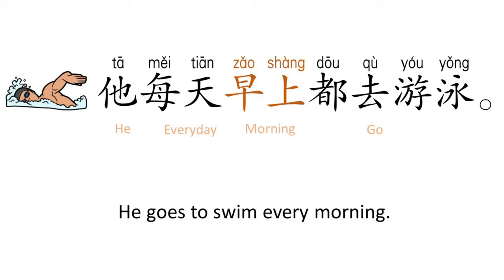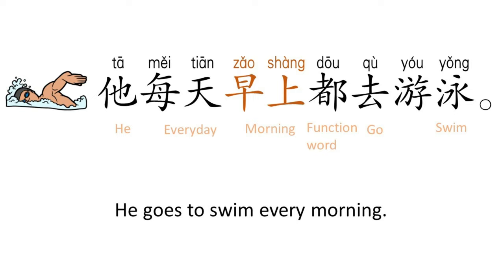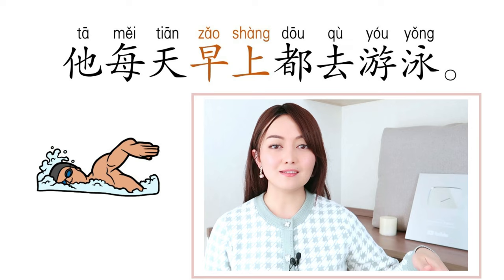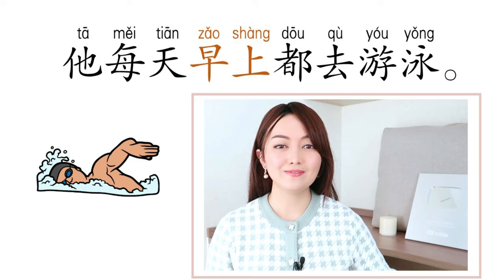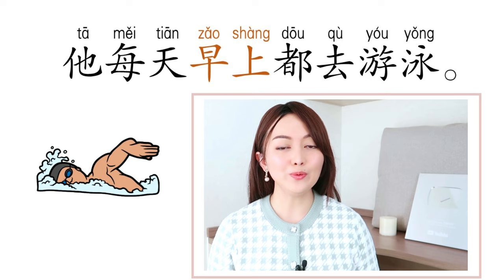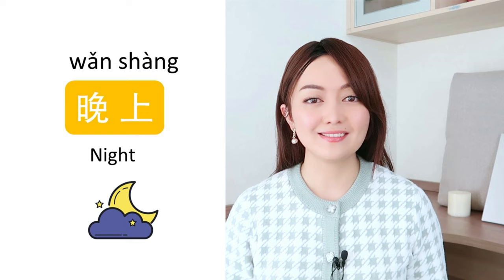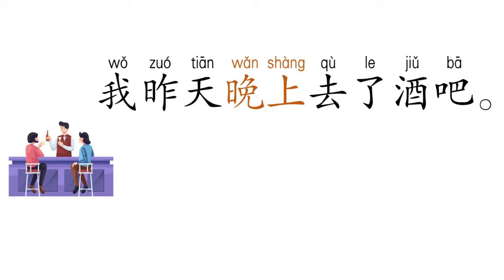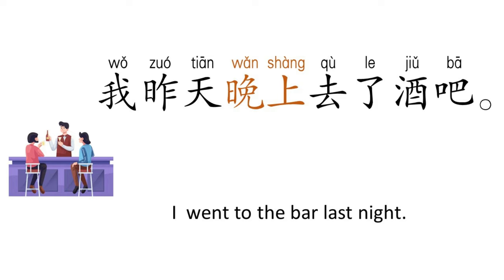游泳 is 'to swim.' The function word 都 is used to emphasize 'every morning — every single morning.' 他每天早上都去游泳. Next: 我昨天晚上去了酒吧 means 'I went to the bar last night.' 我 is 'I', 昨天 is 'yesterday', 晚上 is 'night.'